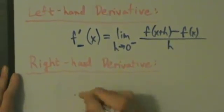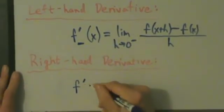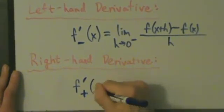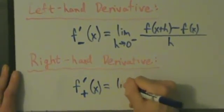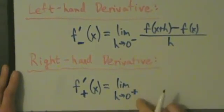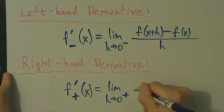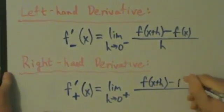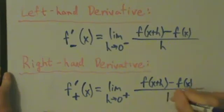A right-hand derivative will come as no surprise. It'll be f prime, and then in the subscript there's a plus sign of x equals limit as h approaches zero from the right, from the positive direction, of f of x plus h minus f of x all divided by h.